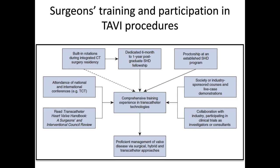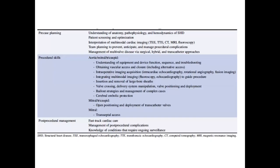The industry is very supportive of surgeon training on different platforms. We are also creating courses and live case demonstrations with society and industry sponsorship, and there are more surgeons now on panels at national and international conferences alongside interventional cardiologists. In terms of our involvement, surgeons should be involved in: pre-case planning — understanding anatomy, pathophysiology, and hemodynamics of structural heart disease; patient screening and optimization; interpretation of multi-modal cardiac imaging; team planning to prevent, anticipate, and manage procedural complications; and management of multi-valve disease with surgical, hybrid, or transcatheter procedures. Procedural skills include understanding equipment and device function, obtaining vascular access and closure, imaging acquisition, insertion and removal of large sheaths, valve crossing, delivery system manipulation, valve positioning and deployment, bailout strategy, cerebral and pelvic protection, and transseptal puncture.